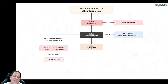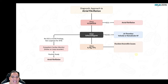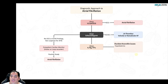On your exam, look for reversible causes. Send labs for potassium and magnesium abnormalities — these are quick to fix — and check for thyrotoxicosis if a patient presents with new-onset AFib.